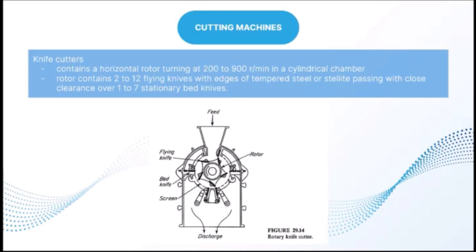For cutting machines, a rotary knife cutter contains a horizontal rotor turning at 200–900 rpm in a cylindrical chamber. Under the rotor are 2–12 flying knives with edges of tempered steel or stellite passing with close clearance over 1–7 stationary bed knives. Feed particles entering from above are cut several hundred times per minute and emerge through a screen with 5–8 mm openings. The flying knives may be parallel or angled relative to the bed knives depending on feed properties. Rotary cutters and granulators are similar in design; a granulator yields more or less irregular pieces.